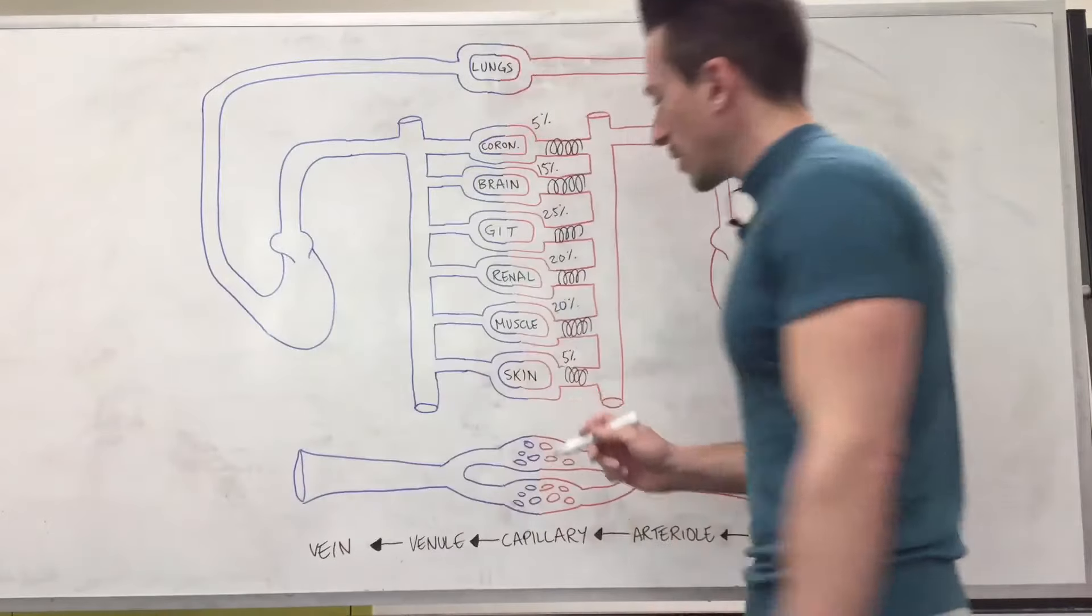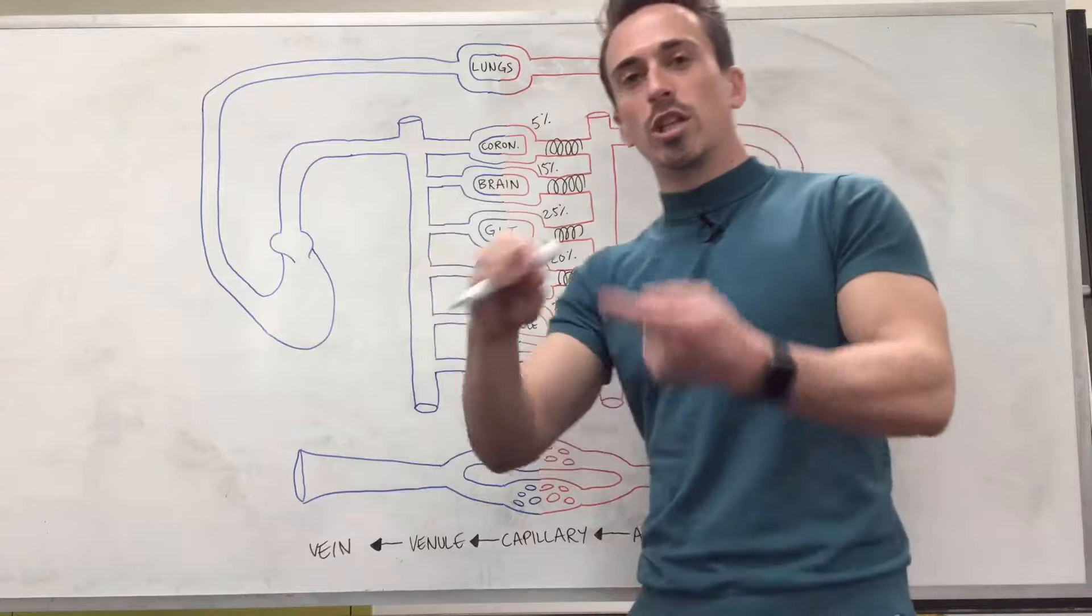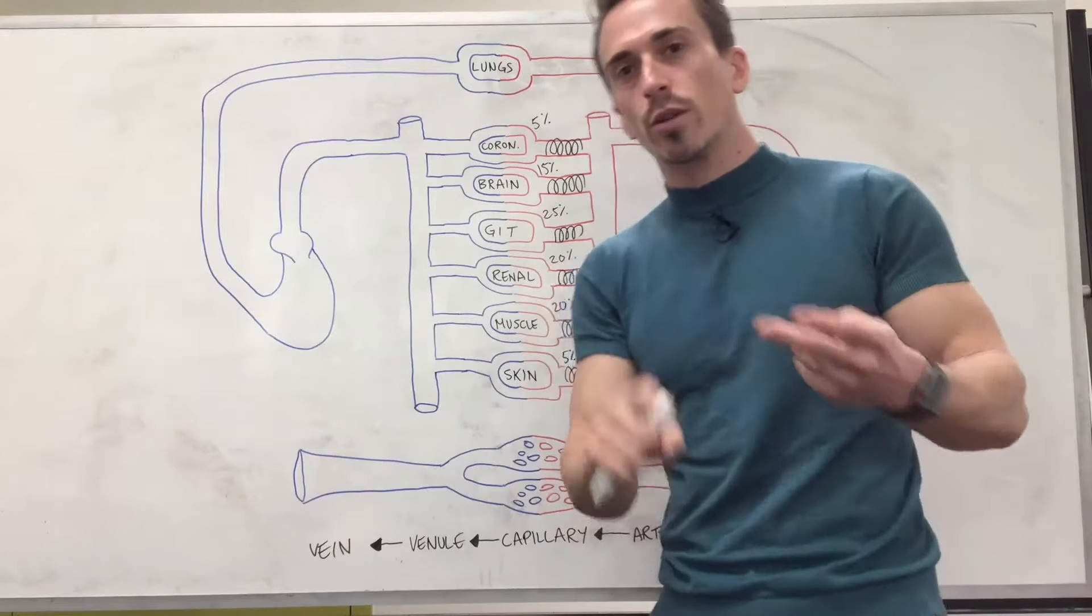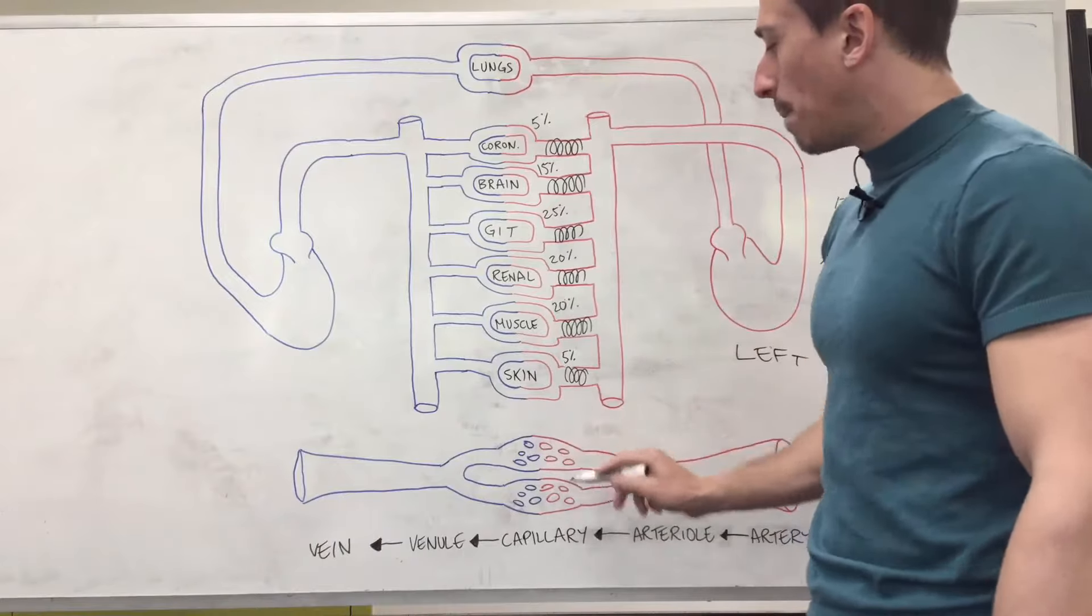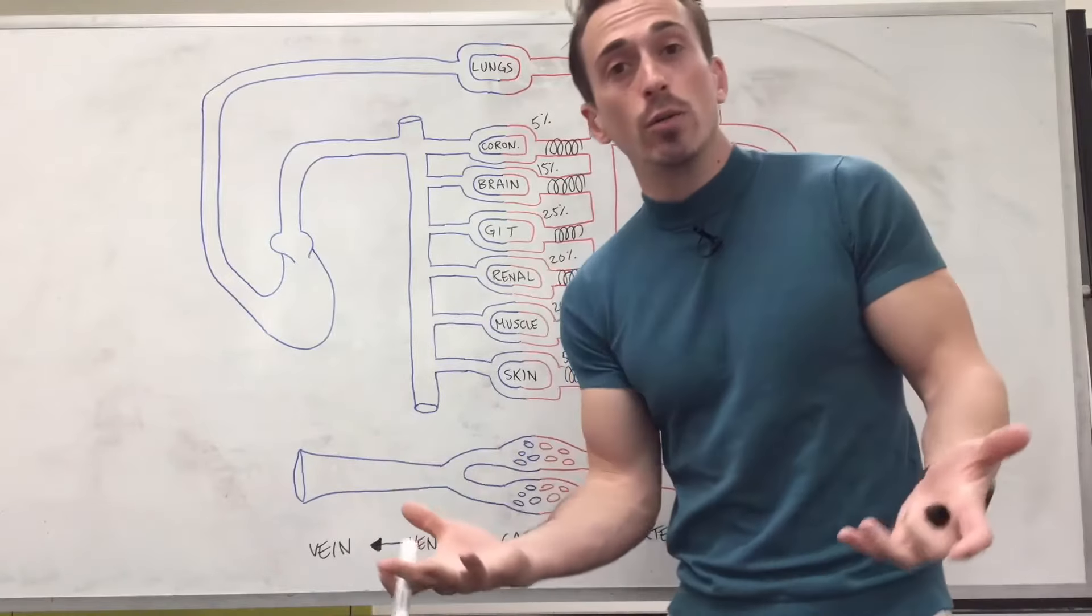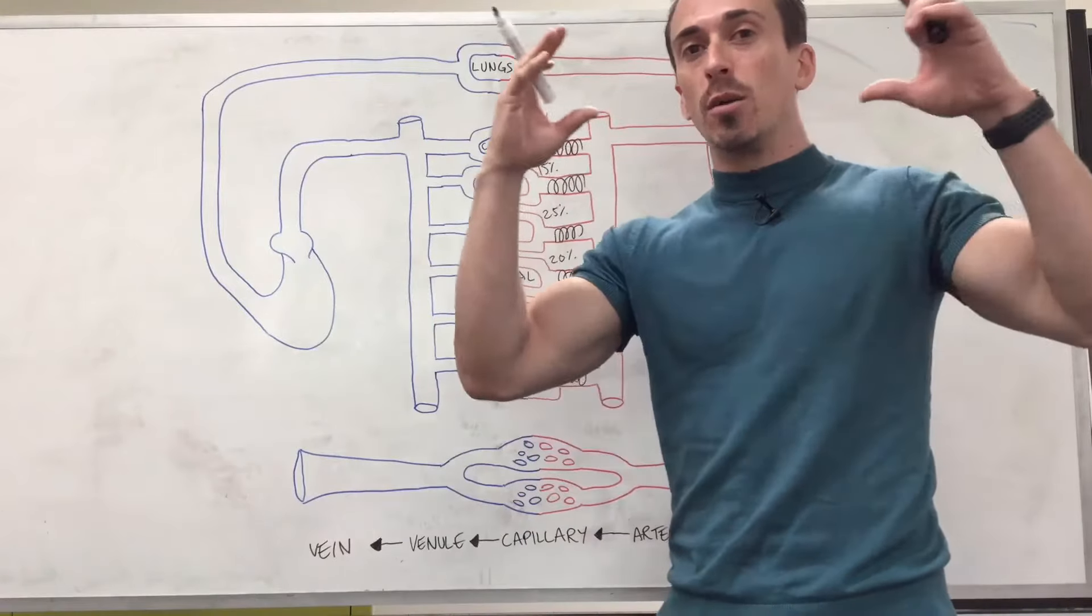Now what we have right in the middle here are the capillary beds. Now this is the site of exchange. We're exchanging gases, we're exchanging nutrients, we're exchanging metabolic waste products and you can see that capillary beds are porous and that means they have holes in them and you can have different types of capillary beds and different sized pores.